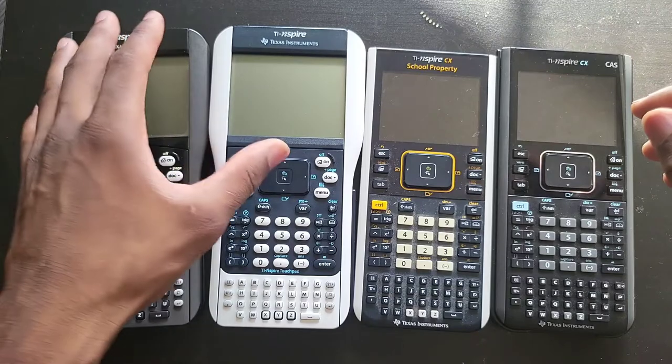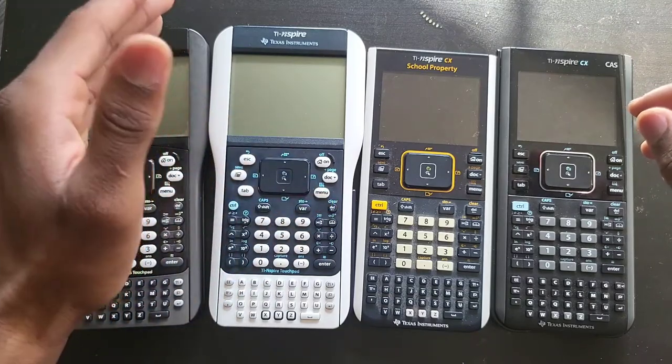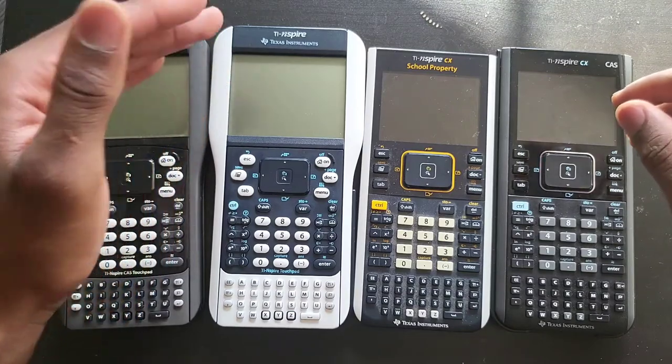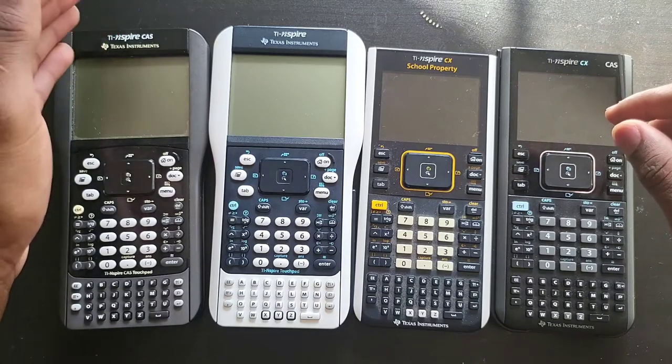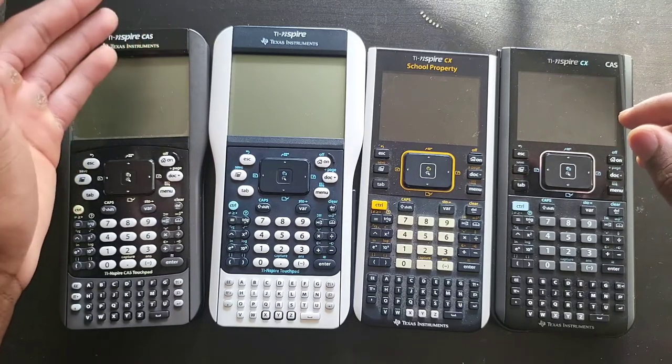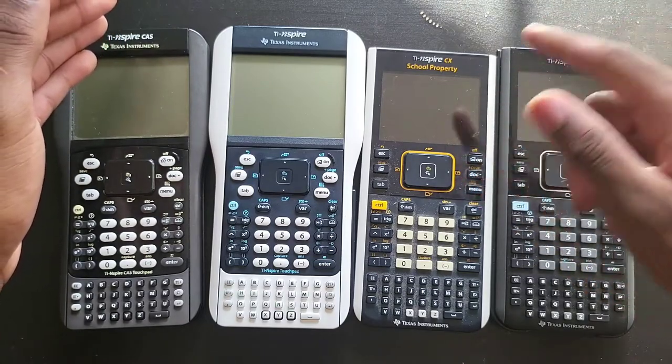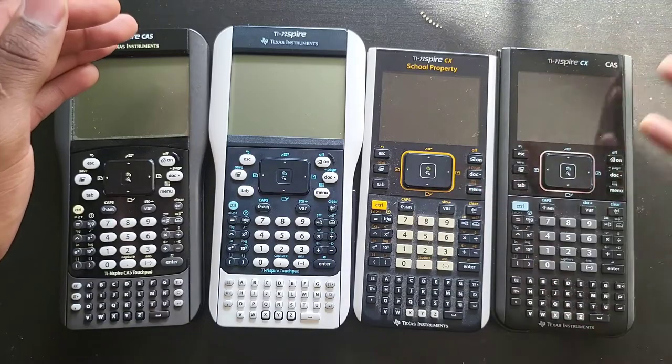On Wikipedia it says that these two are clocked at 90 megahertz slash 120 megahertz, so I'm assuming when you're doing heavy calculations, the calculator can overclock itself up to 120 megahertz.